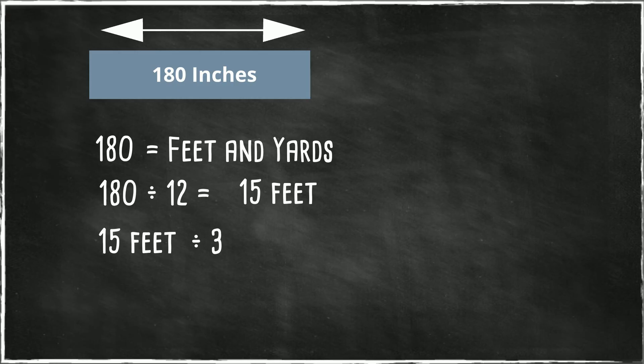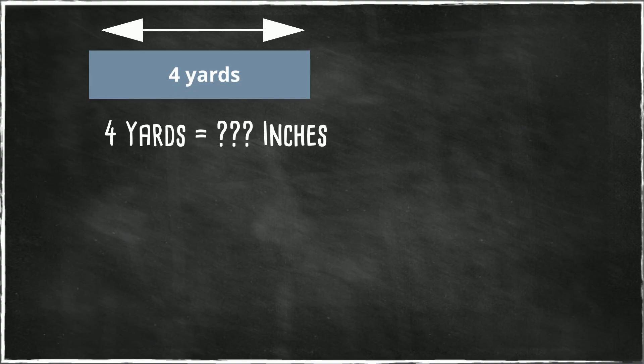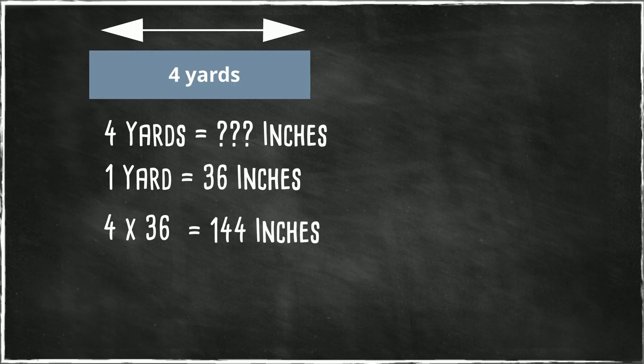4 yards equals how many inches? Well we know from the chart that 1 yard equals 36 inches. So we just multiply 4 times 36, which equals 144 inches.